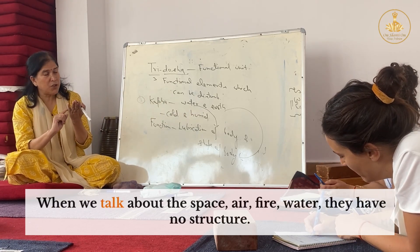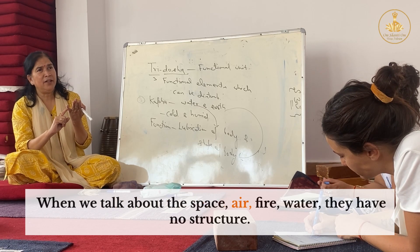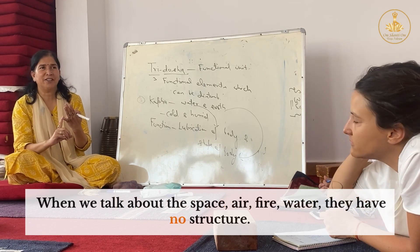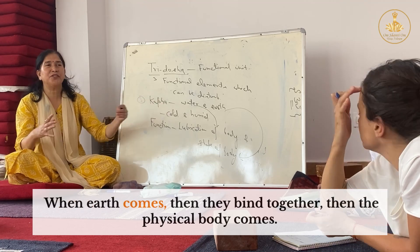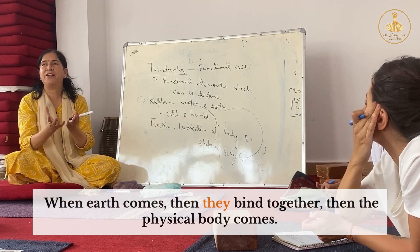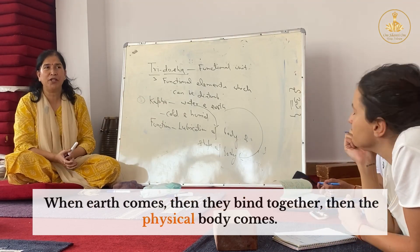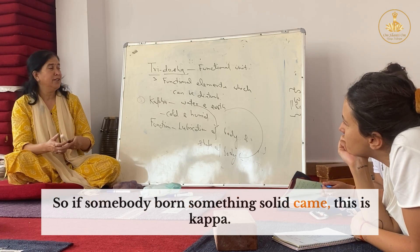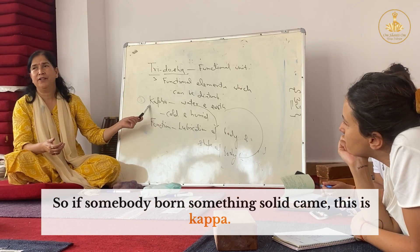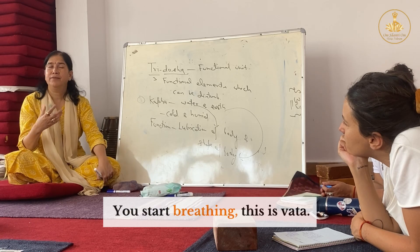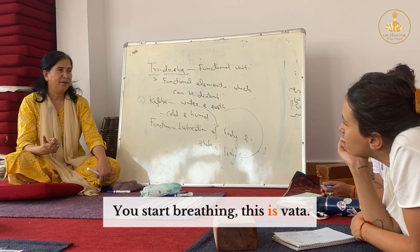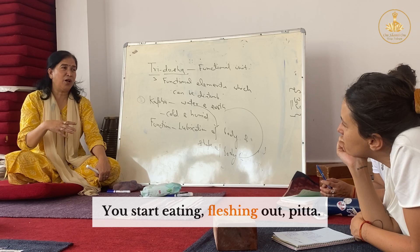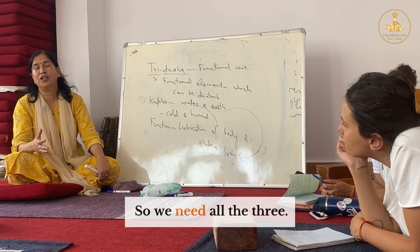When we talk about space, air, fire, and water, they have no structure. When earth comes, they bind together and the physical body comes. So if somebody is born, something solid came — this is Kapha. You start breathing — this is Vata. You start eating, fleshing out — this is Pitta. So we need all three.